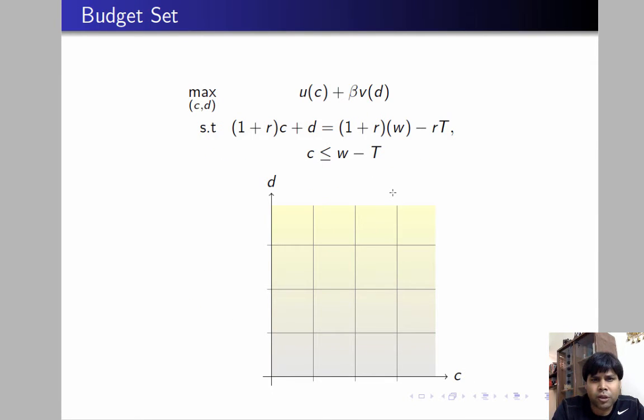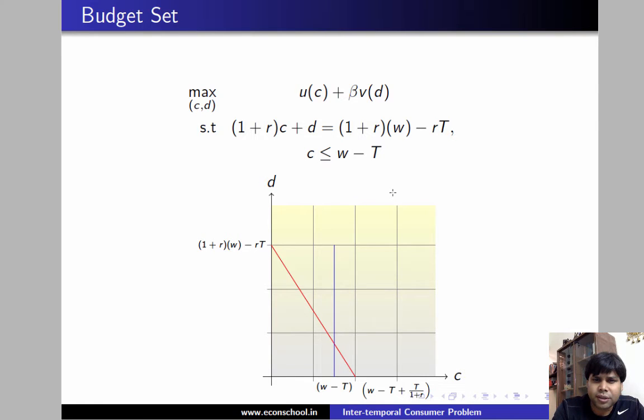So first let's plot the first constraint which is 1 plus RC plus D equals 1 plus RW minus RT. And you are going to see something like this. If you are going to plot the second constraint, that's how it's going to look.